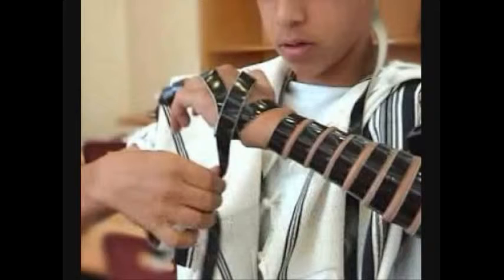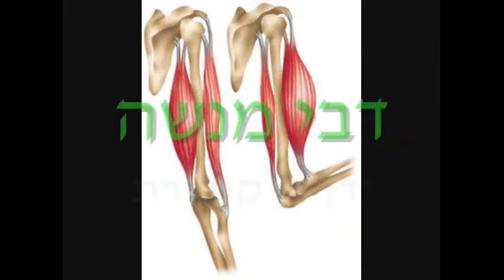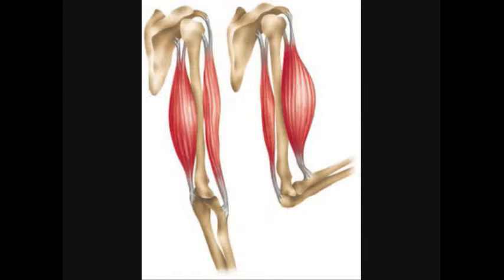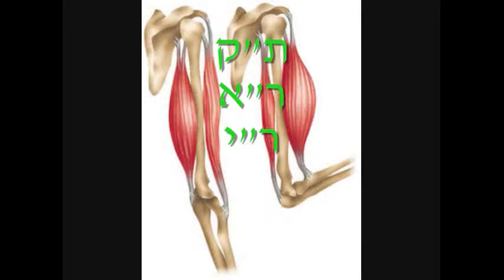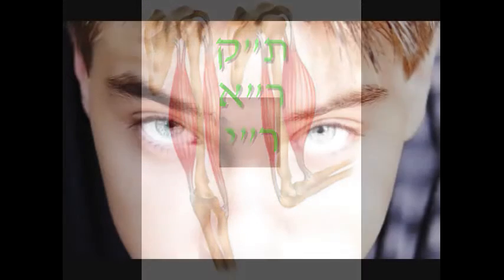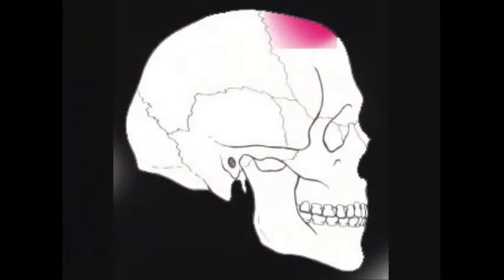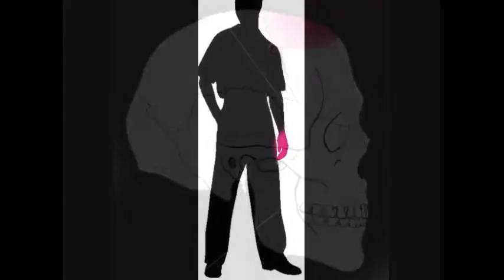From this posuk we learn hilchos tefillin. Yaakov Avinu puts his left hand on the head of Menashe. When the Torah says you put tefillin on the hand, it doesn't mean any place on the hand — it means on the kibores. How do you know that? There are three opinions, a machloikes. The Tanna Kama will learn from a hekesh of tefillin shel yad to tefillin shel rosh: just as 'bein einecha' does not mean between your eyes but rather begova sheber rosh, all the way on top — so too 'al yodcho' means begova sheber yad, the high part of the arm. And the hekesh is merumos.